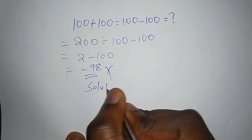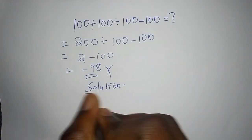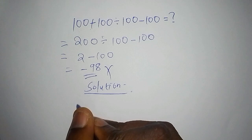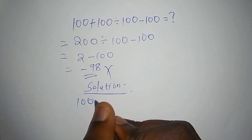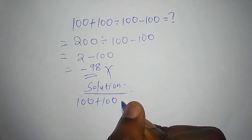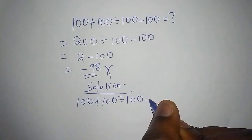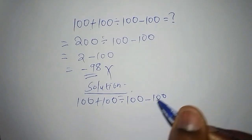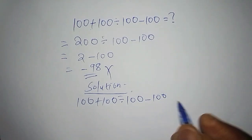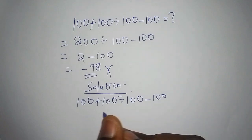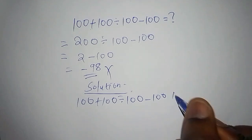So, we have what is called the solution. Under solution, let's now write the problem that you want to solve. We have 100, add to 100, divide by 100, subtract from 100. From this math problem, we have to talk about what is called the BODMAS.